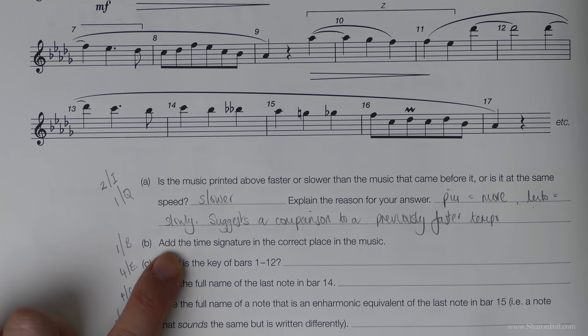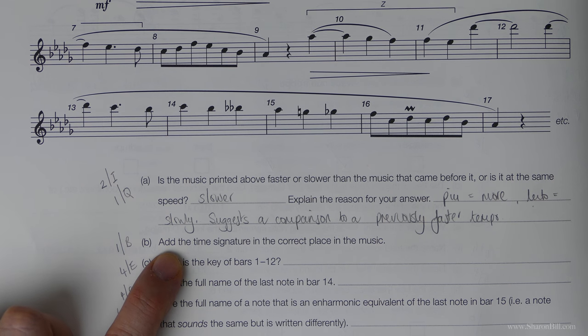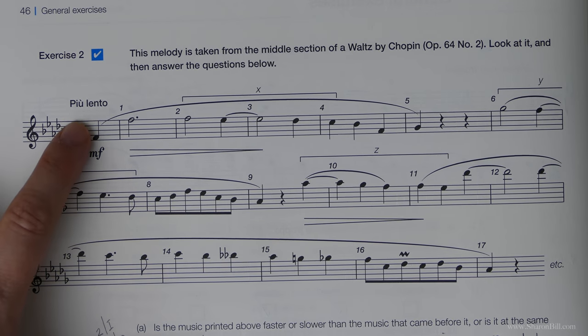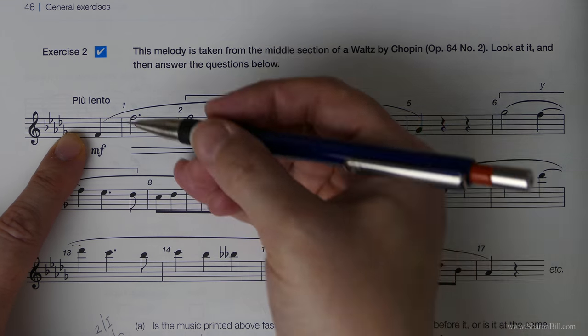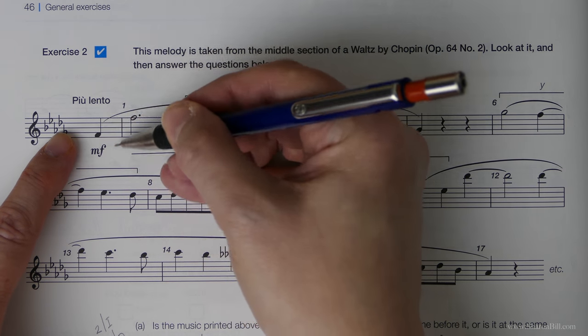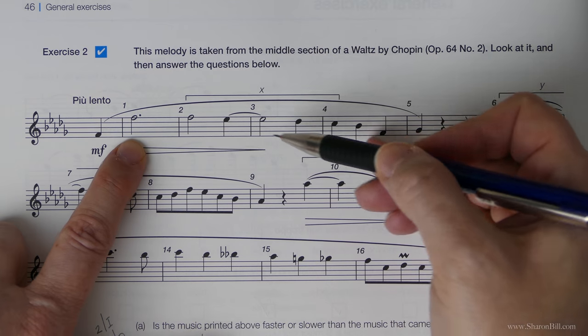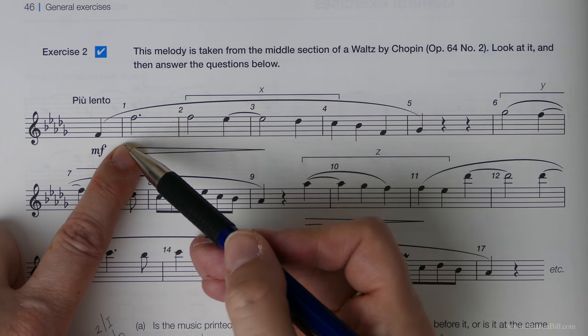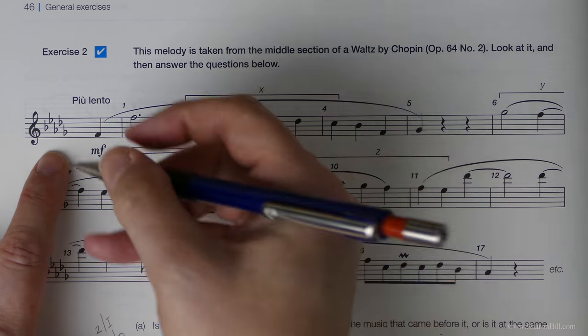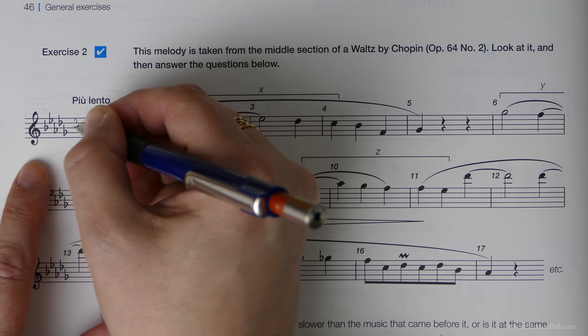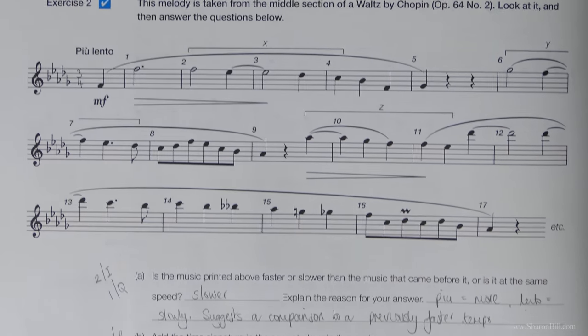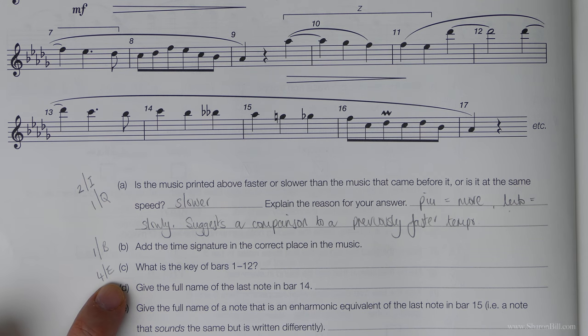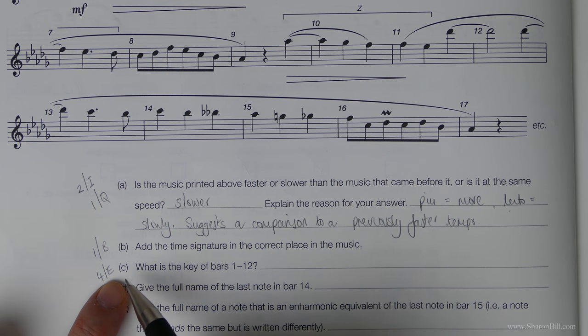Add a time signature in the correct place in the music. So of course the time signature goes here at the beginning of the music. And we've got an anacrusis here. So this first section won't help us. But if we look in the later bars, it's pretty obvious that that's a nice, easy 3/4, 3 quarter notes, 3 crotchet beats per bar.